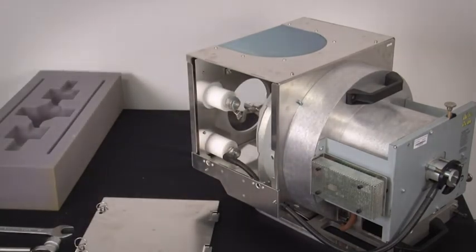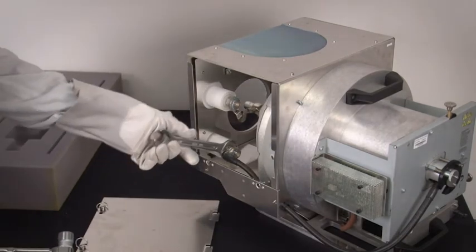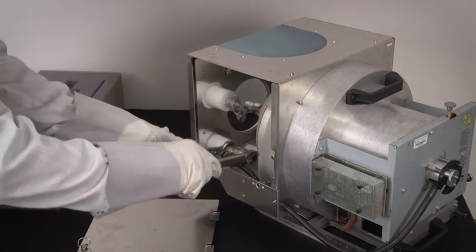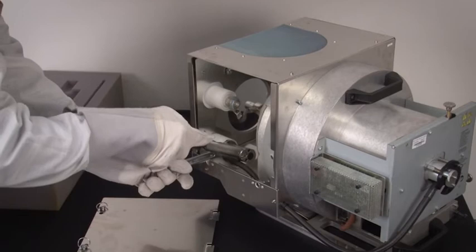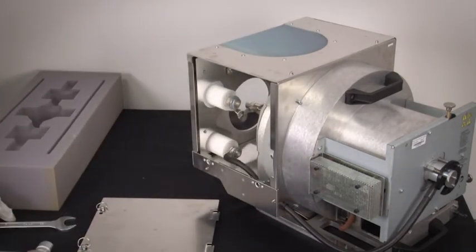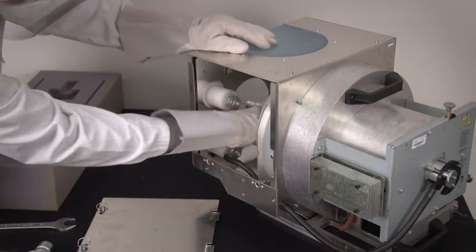Next, double check that the cathode connector in front of the lamp house is also tightened according to the torque specifications in the manual. This is very important as it may have come loose over time. Now, remove the protective cloth from the lamp.